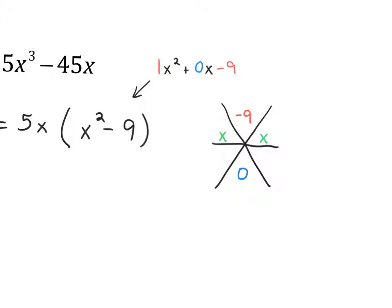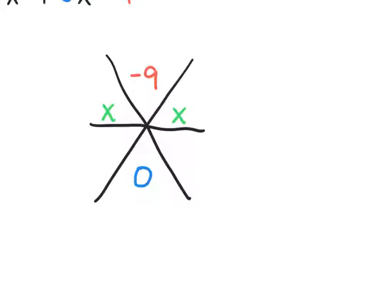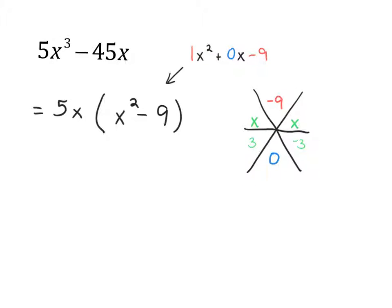Now we ask ourselves, what two numbers multiply to a negative 9 but add to a 0? And by the way, opposites add to 0. So 3 and negative 3. So there we go. Let's finish this up by bringing down the 5X. And then we have our conjugates, X plus 3 and X minus 3. And some of you could have said, hey, Swenson, I noticed that was a difference of two squares. I could have just written it like that. And you're right, you could have. Because that's a shortcut we learned going from here to there. All we're doing is going backwards.